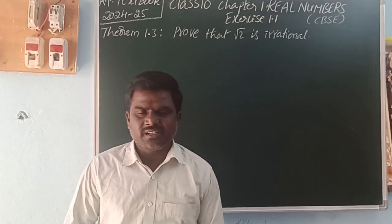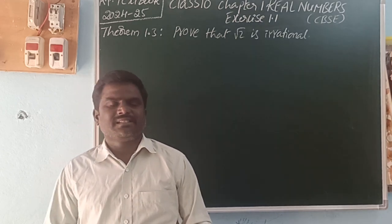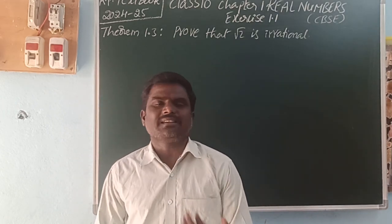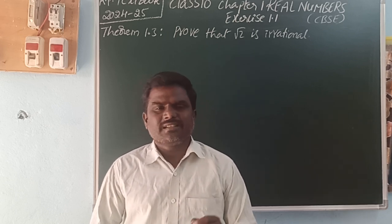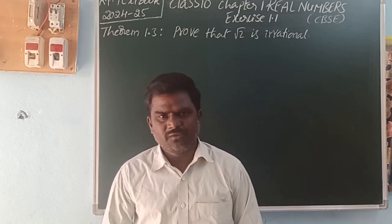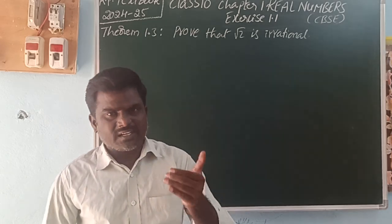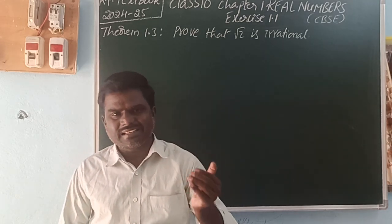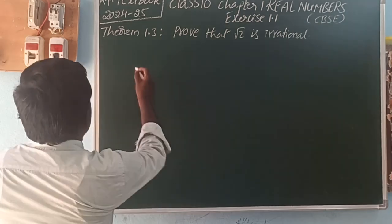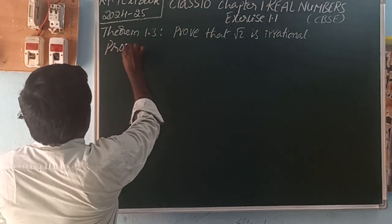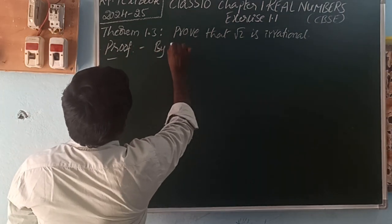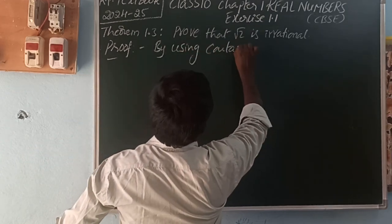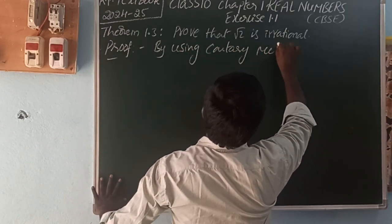What is the contradiction method? First, we assume that it is not irrational — let us take it is a rational number. Then, finally, we prove that it is not rational. That is the contradiction method.